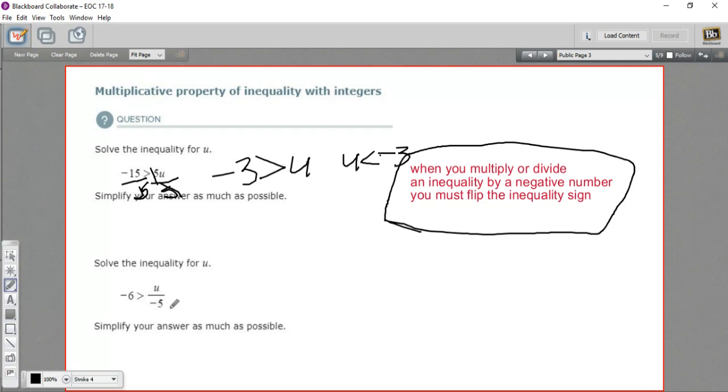Here, u is divided by a negative 5. And I can make that go away by doing the opposite. I can multiply by a negative 5. But of course, I have to do that to both sides. I'll put this in parentheses here. So we'll multiply by negative 5 on both sides. So here, the negative 5s will cancel. And I'll just get u on that side.